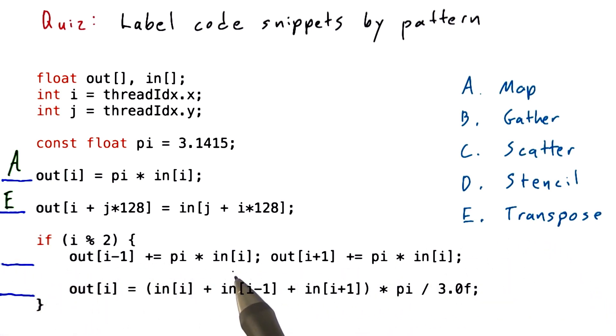And you couldn't really call it a stencil operation either, because a stencil operation should generate a result for every element in the output array. And this doesn't do that.